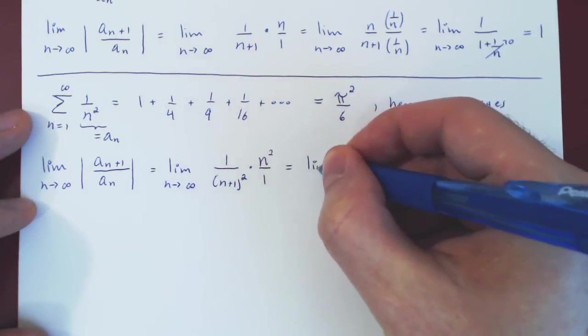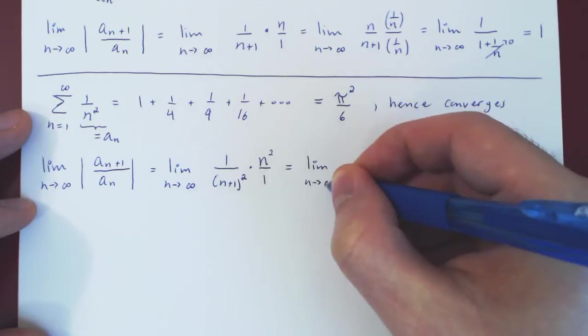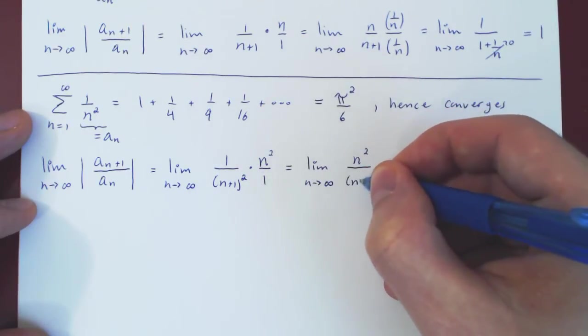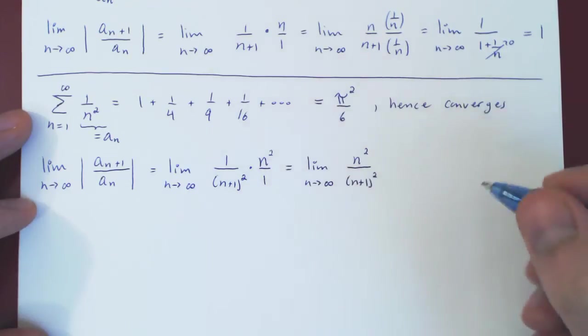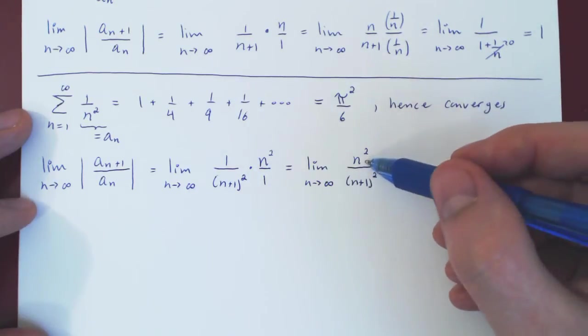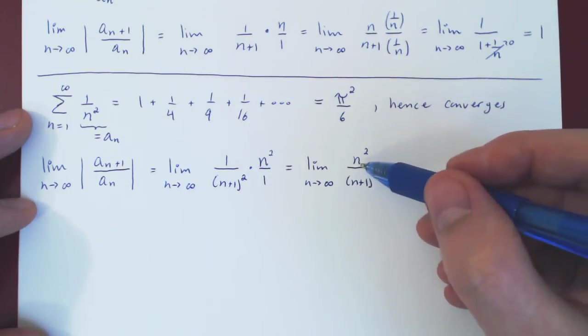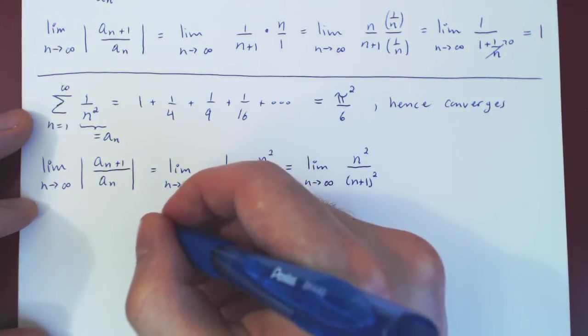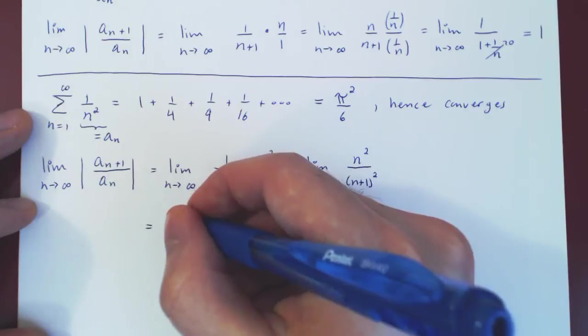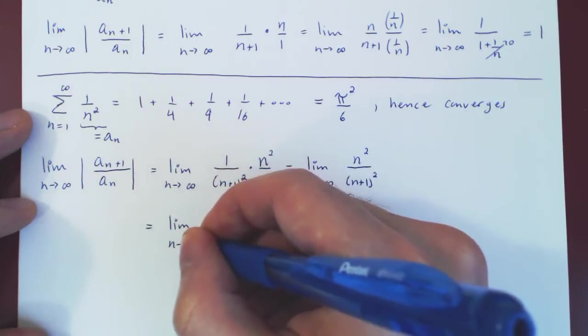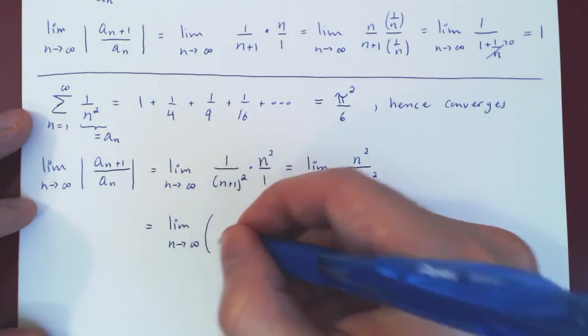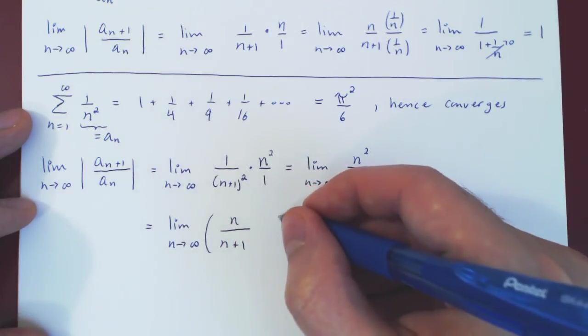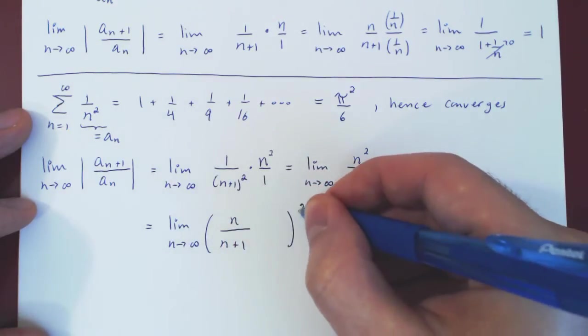Multiply across and you have quite simply n squared over (n+1) squared. Now here you don't have to expand this out. You can simply put both under the power of 2. So you can look at this as the limit as n tends to infinity of n over n+1, all squared.